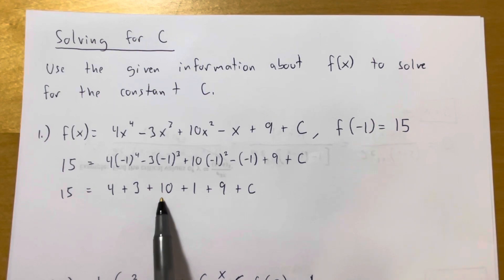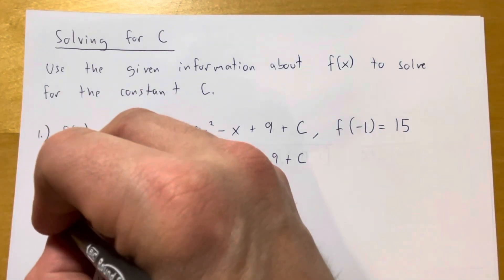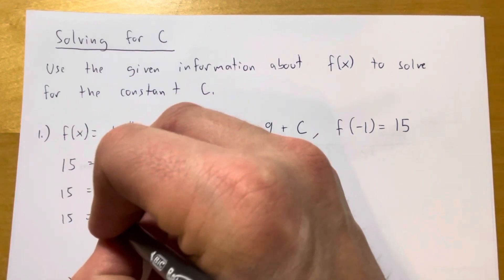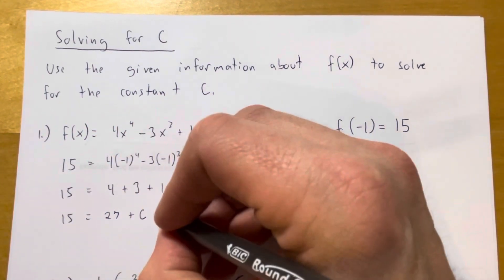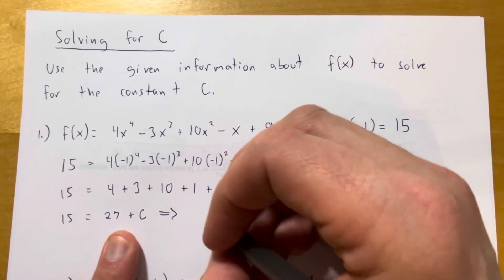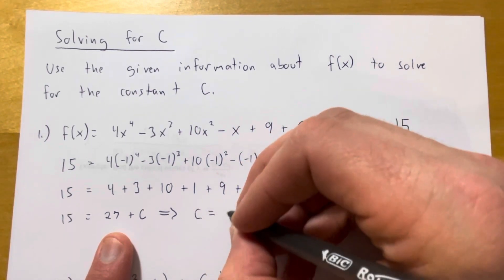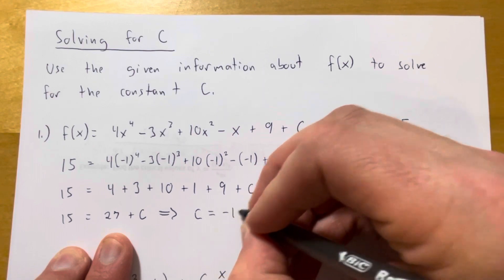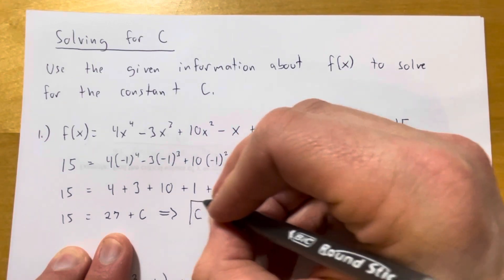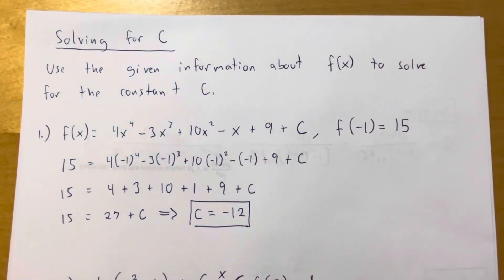So let's add these up. This is 10 plus 10 plus 7, so 27. 15 equals 27 plus C. I can subtract 27 from both sides. And from that, I'm going to see that C is equal to negative 12.